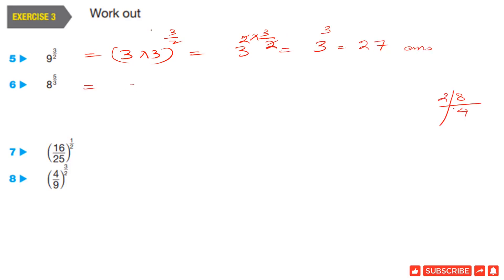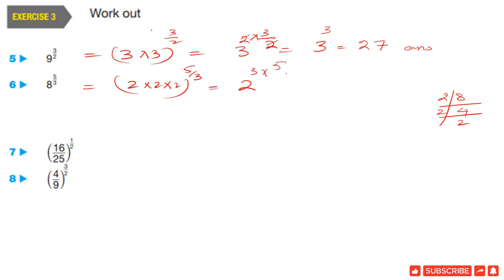Question 6: 8 power 5 by 3. The prime factors of 8 are 2 times 2 times 2, so we write 2 power 3 whole power 5 by 3. Applying the rule gives 2 power 3 times 5 upon 3. The 3 cancels and we get 2 power 5, which is 32.